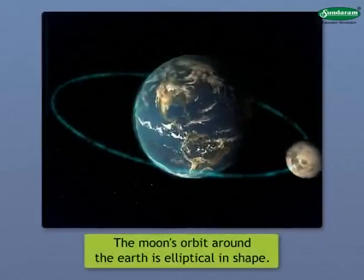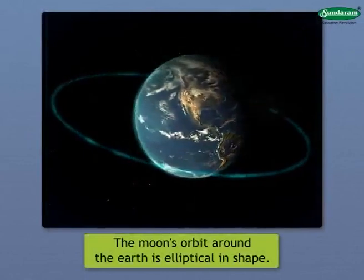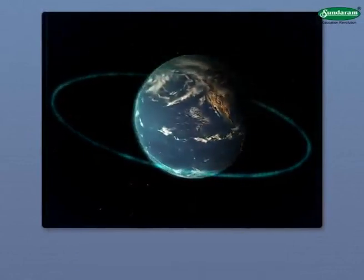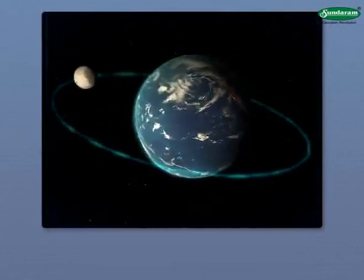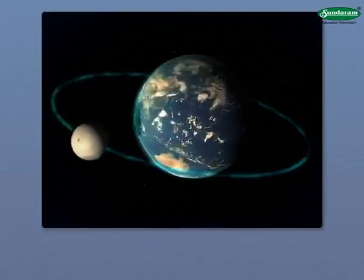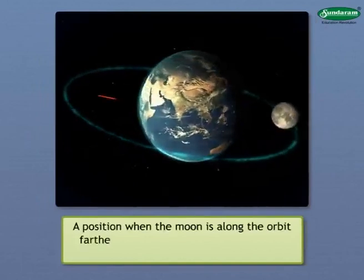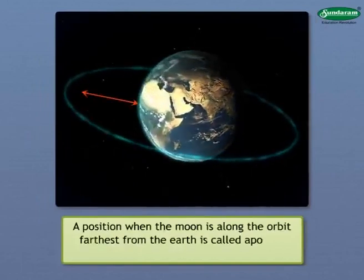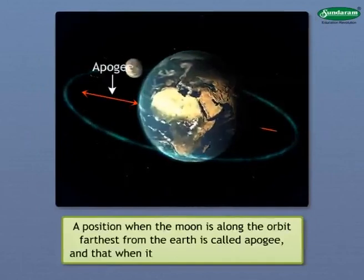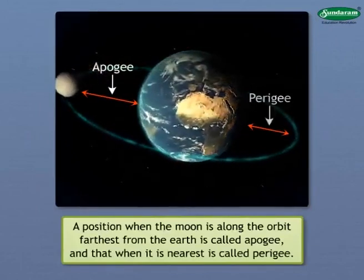The Moon's orbit around the Earth is elliptical in shape. Therefore, its distance from the Earth is not the same everywhere in its orbital path. A position when the Moon is along the orbit farthest from the Earth is called Apogee and that when it is nearest is called Perigee.